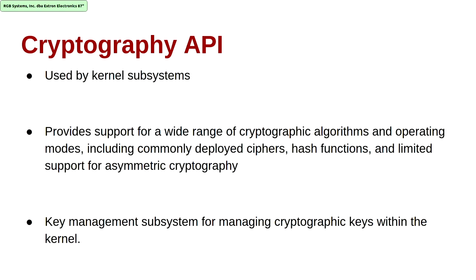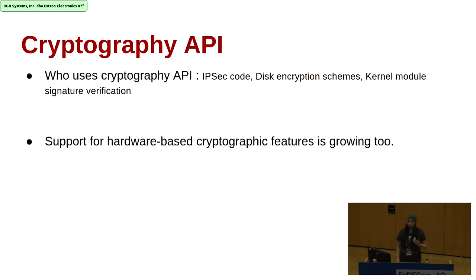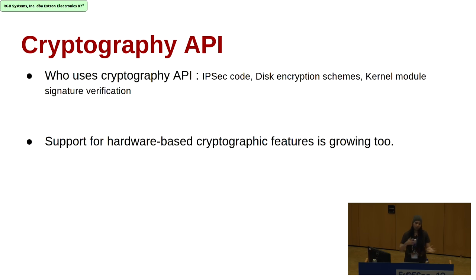The Cryptography API is an implementation of various cryptographic algorithms in the kernel. It is used by many kernel subsystems, including commonly deployed ciphers, hash functions, and limited asymmetric cryptography algorithms. There is also a key management subsystem for managing cryptographic keys within the kernel. The Cryptography API is mainly used by the IPsec code, disk encryption schemes, and kernel module signature verification. There is also work supporting hardware-based cryptographic features.